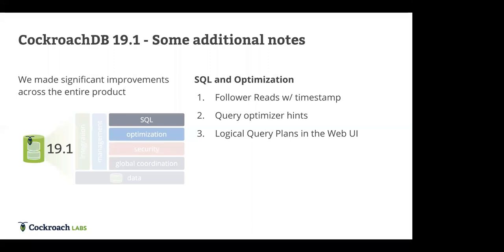We haven't just built Postgres on top of a distributed system — we actually have our own SQL execution engine underneath, which we've been building for a couple of years, plus the cost-based optimizer. Two additional features: logical query plans in the web UI, which Nate showed — query plans can get extremely complex, and giving DBAs insight into performance impacts is a huge increase in capability. And follower reads, where we can now do queries as of a system timestamp.